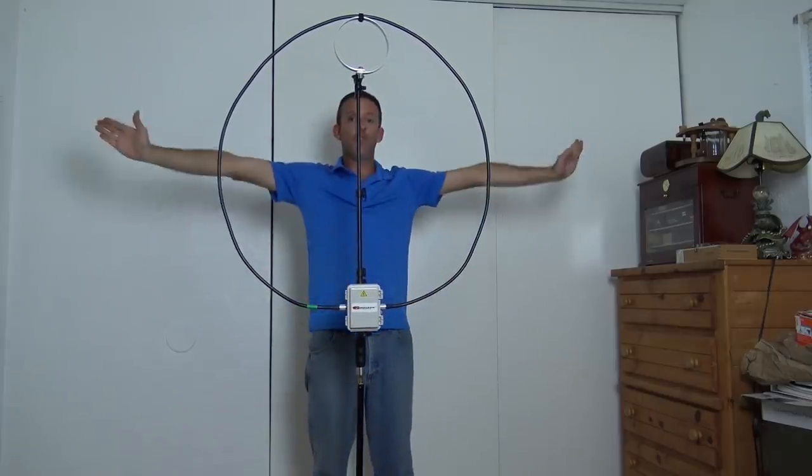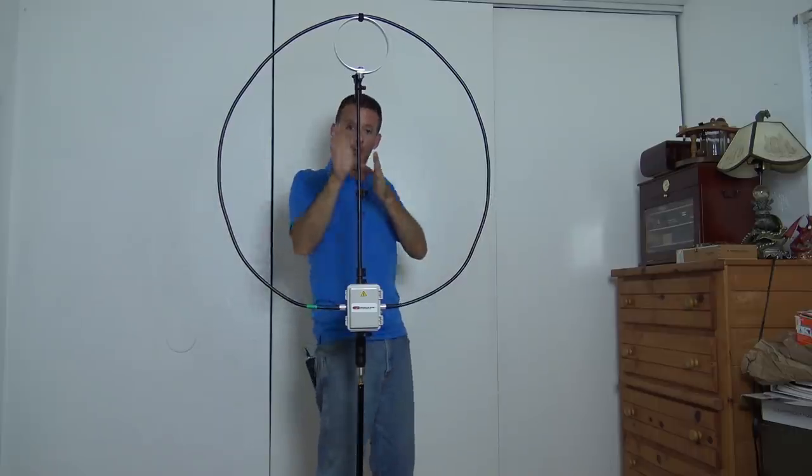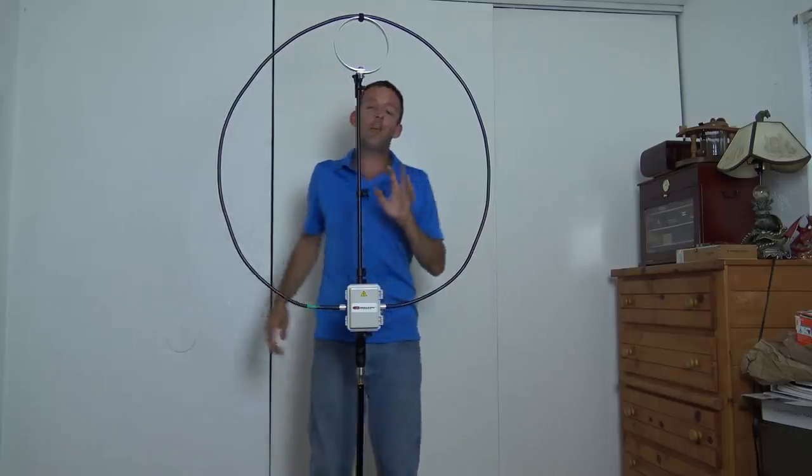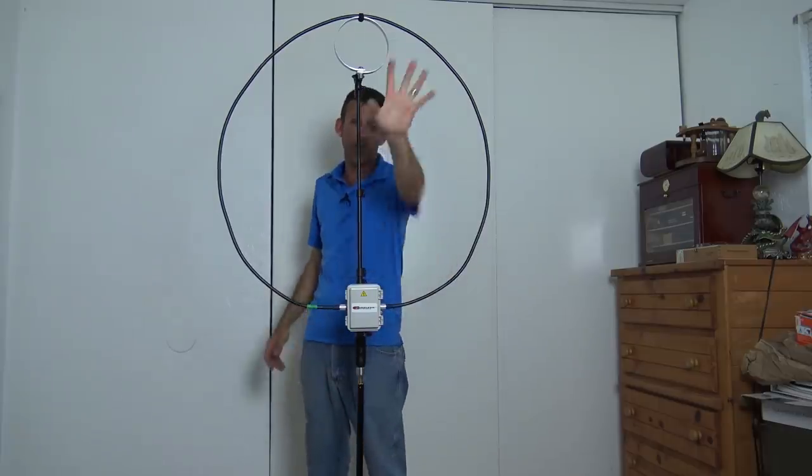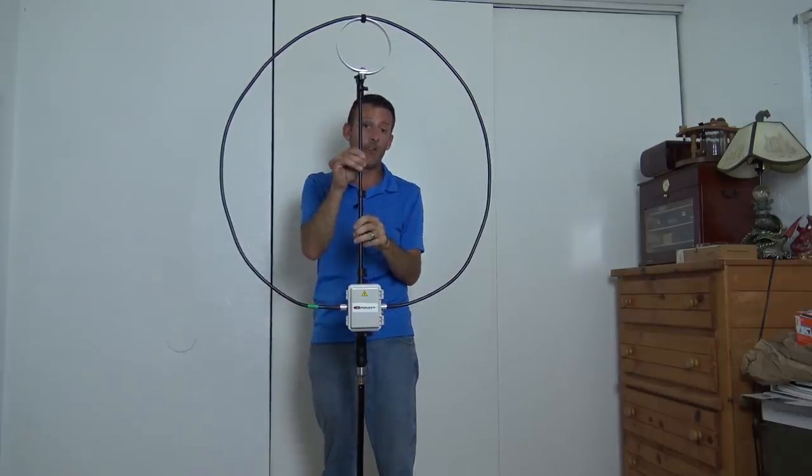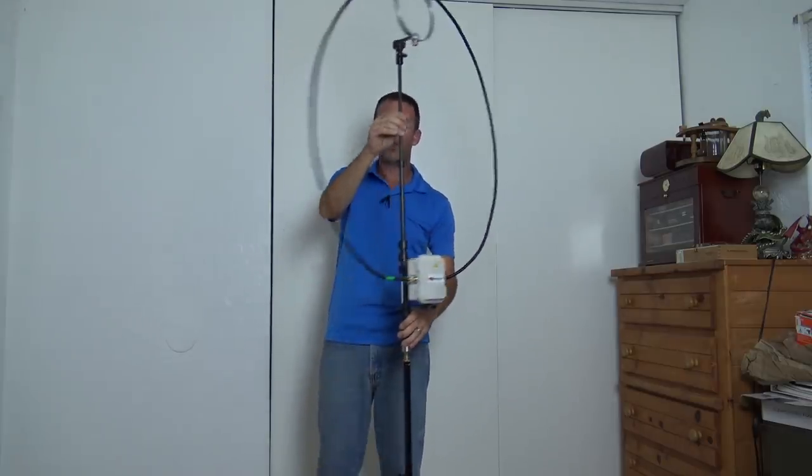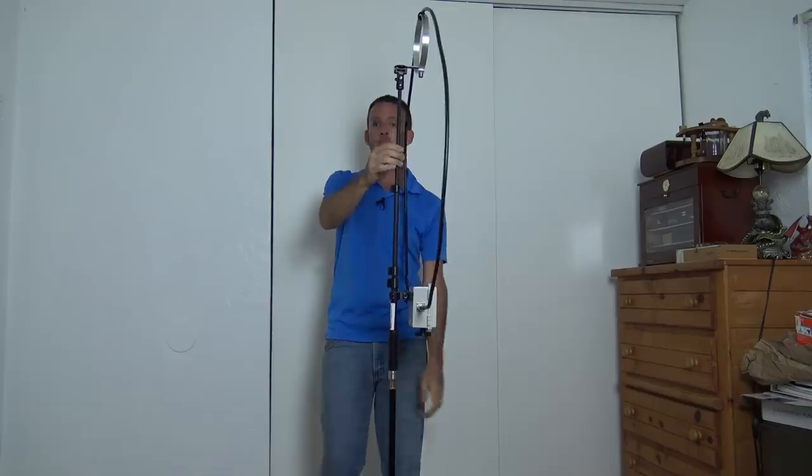So if I face this like this, I would be facing north and south. Through the loop this way, broadside to it, I would have a null. So if I had some sort of strong noise or signal that way, I could null it out off the side of the loop. If I wanted to work somebody to the west, I would want to turn it this way. You get my picture?